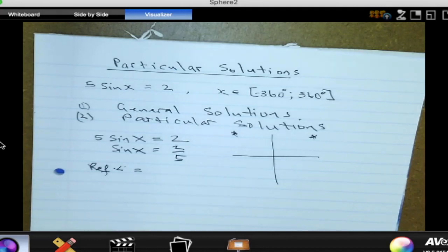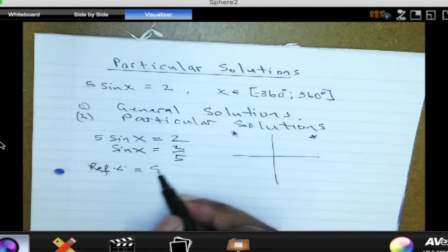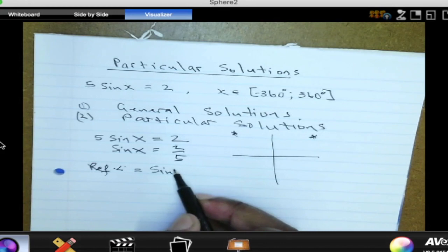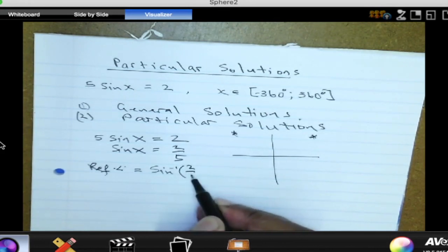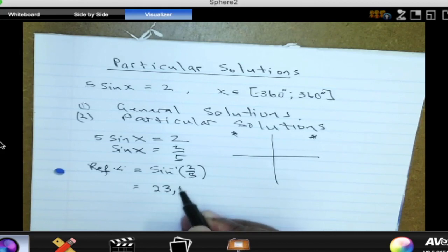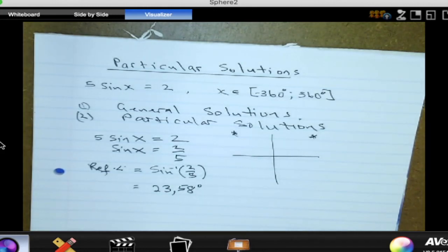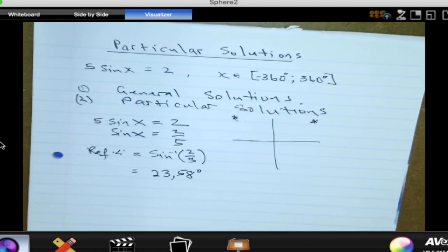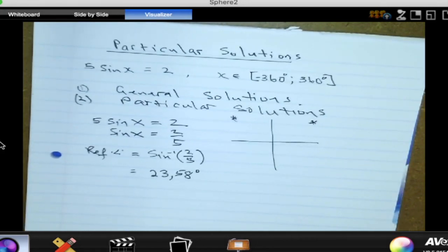Then let's find the reference angle. We have a calculator, let's make it 2 decimal places. So it's shift sine of 2 over 5. What do you get? 23.58 degrees. Okay, so the reference angle is 23.58 degrees.